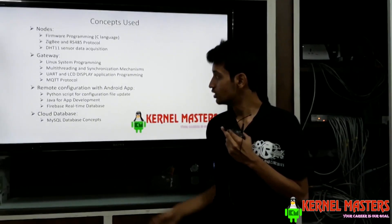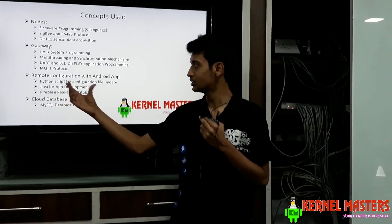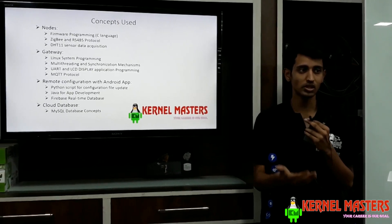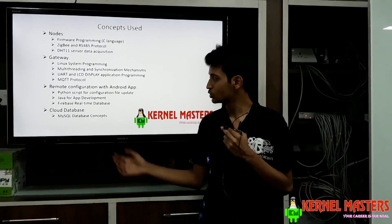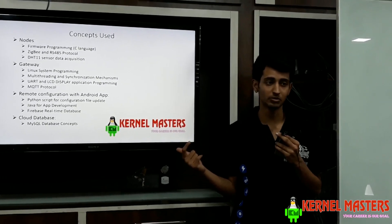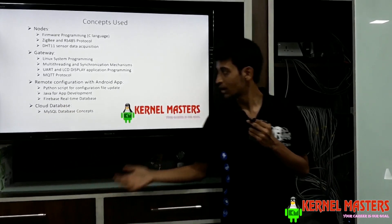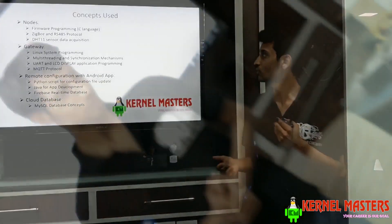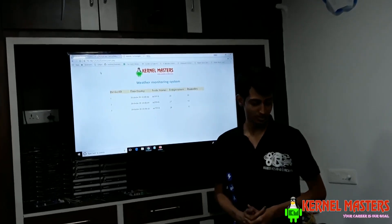Next comes remote configuration with the Android app. For that, we learned Python programming — I made a simple Python script which updates the configuration file as soon as it notices any change in the server. We used Java for Android app development. We also got to know about Google Cloud and the Firebase Realtime Database, which is a very fast database — that's why it's called Realtime Database. We also learned about MySQL database concepts, queries, and how to make queries from a C program. I am very thankful to the Masters, and it is because of the easy availability of these evaluation boards and continuous support that I was able to make this project a reality. Thank you.